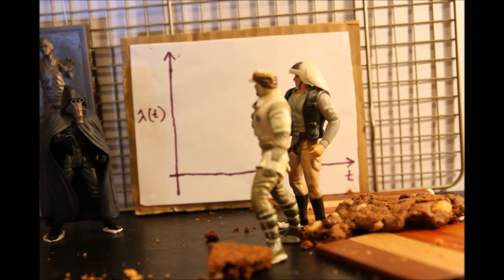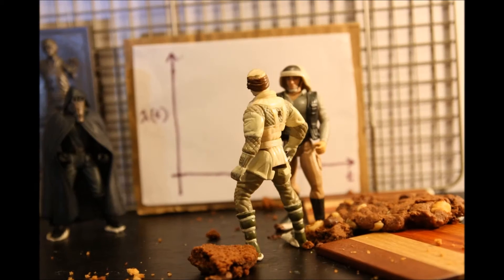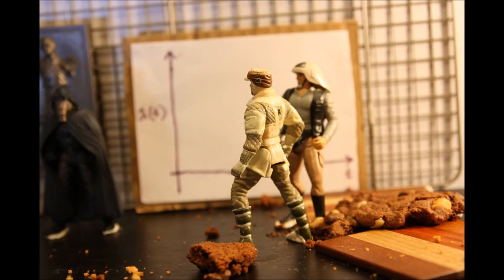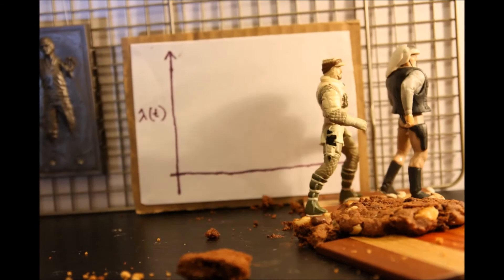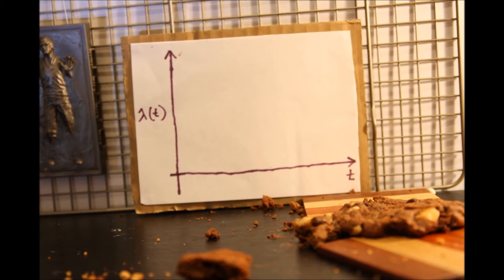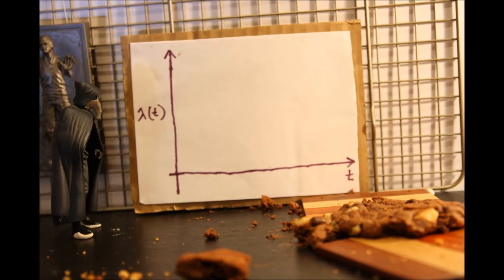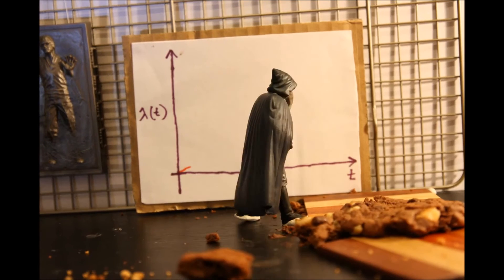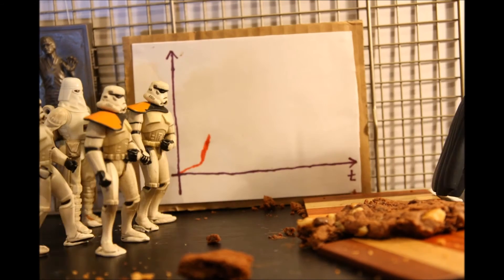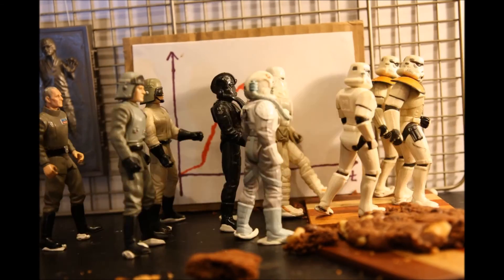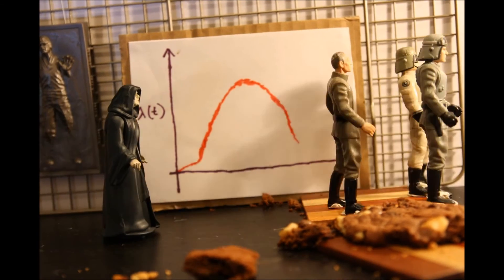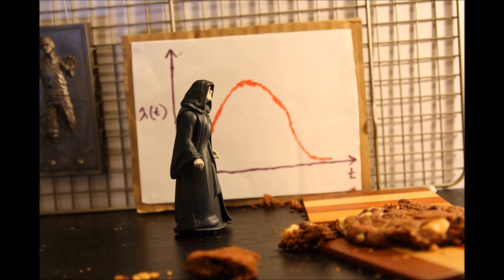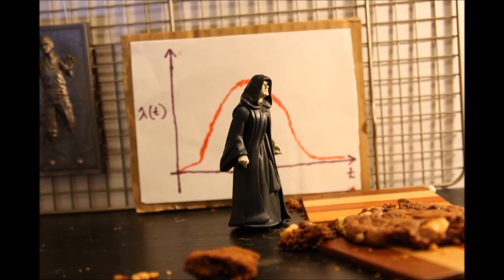There are two main components to the model. The first component is the model for customer arrivals. In our data from a bakery at MIT, there was a surge at lunchtime with additional spikes between classes. We use a non-homogeneous Poisson process as the arrival model, which is able to handle the variable rate.